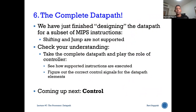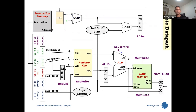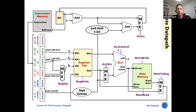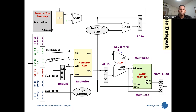That puts together the complete data path. Before closing this chapter, let me run through it one more time step by step so the flow is clear. We'll walk through two instructions — one R-type and one memory access. Don't worry, we will revisit this in more detail during tutorial three after the recess week.